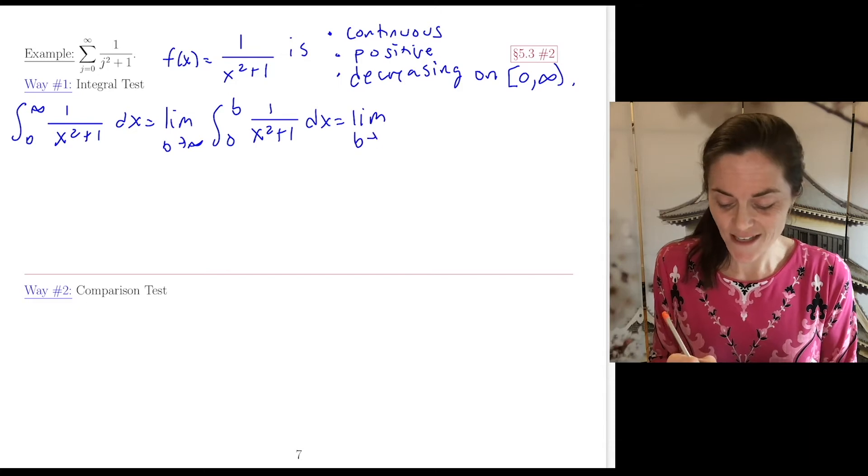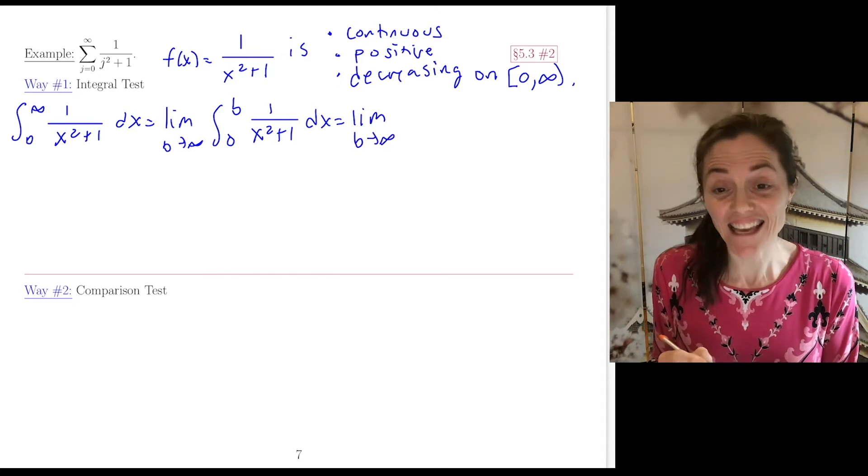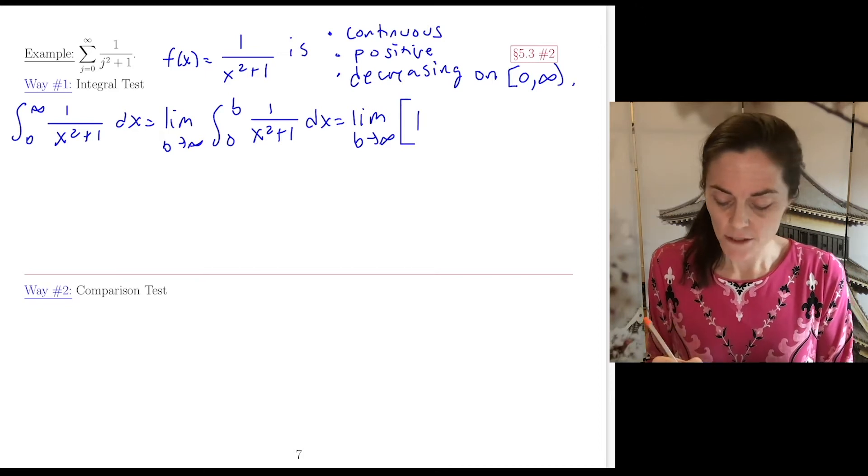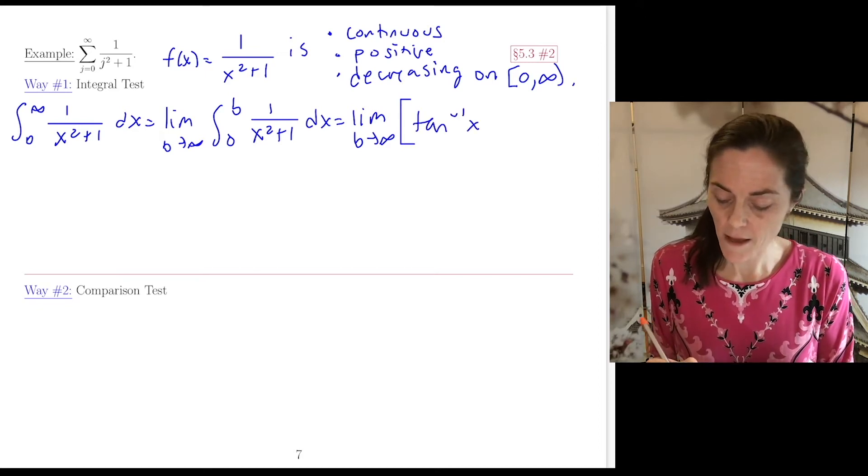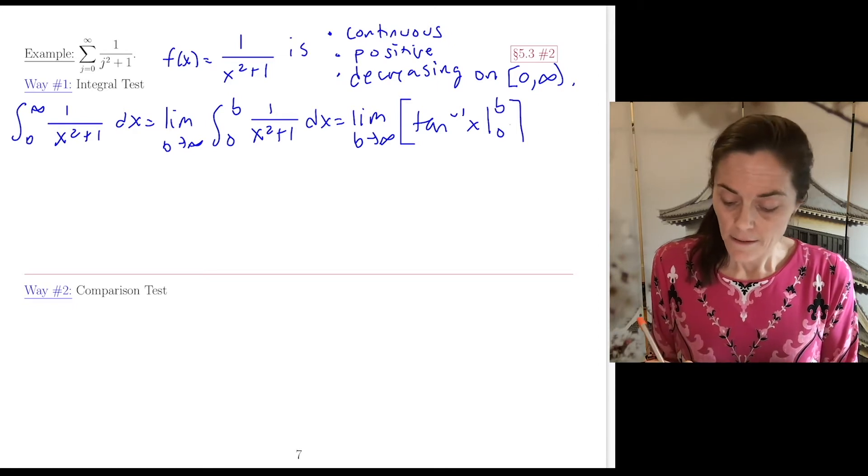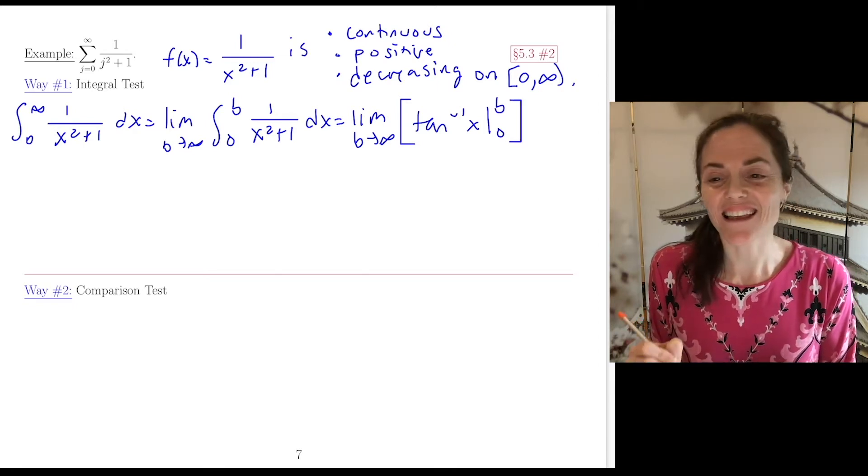When we integrate this function, we get tan⁻¹(x) evaluated from 0 to b, and we are almost ready to calculate this limit.